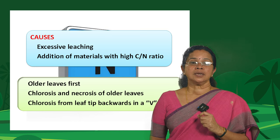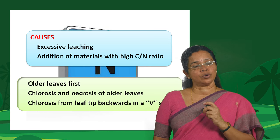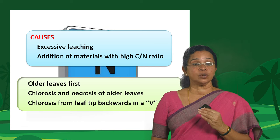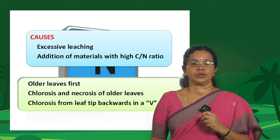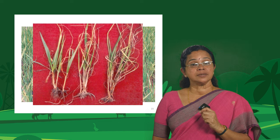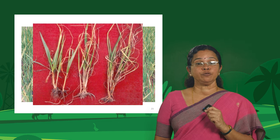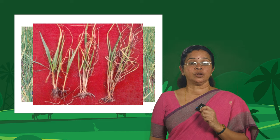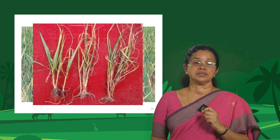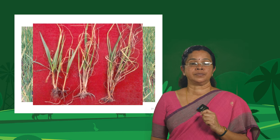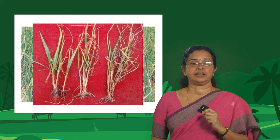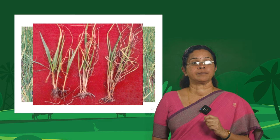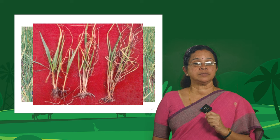Chlorosis is a very common symptom for almost all nutrients, but the mode in which it appears is important. In the case of nitrogen, chlorosis appears from the tip of the leaf backwards in a V-shape — you can clearly see that V-shaped chlorotic appearance on the leaf in maize. In rice, deficiency is seen in the older leaves — that pale appearance visible in the picture. These are typical symptoms of nitrogen deficiency.